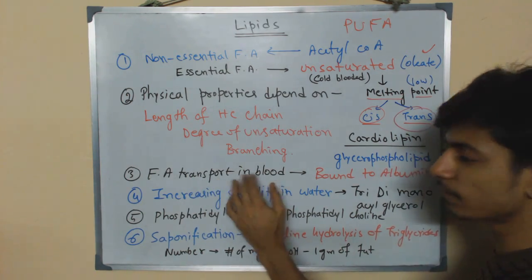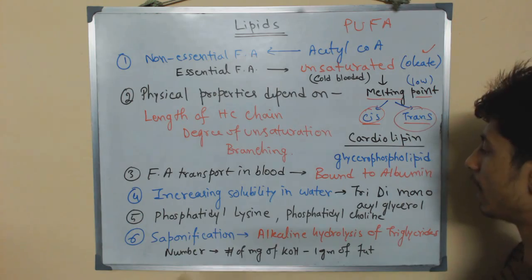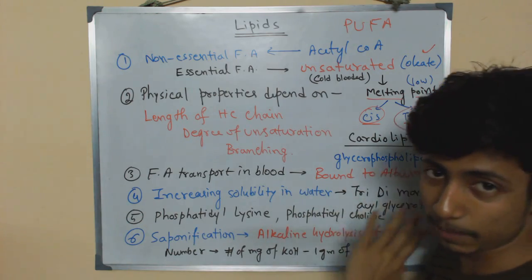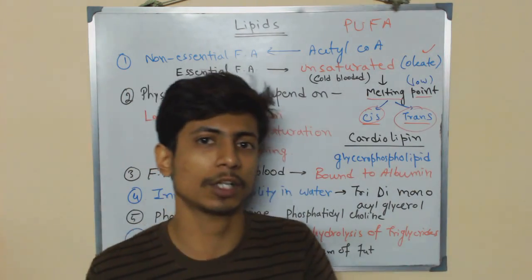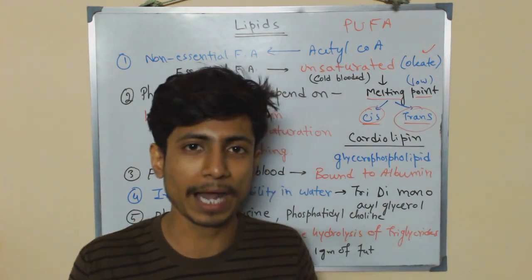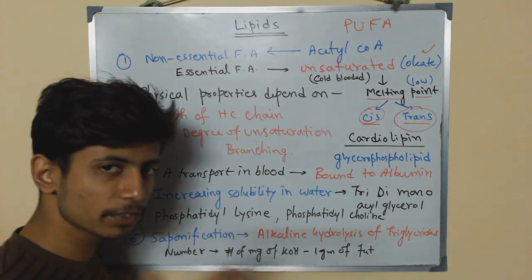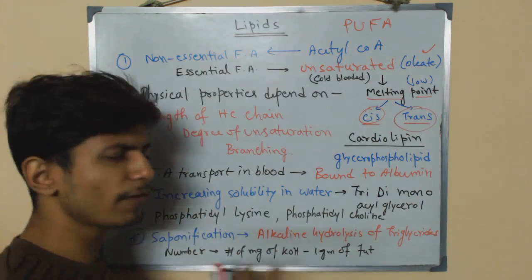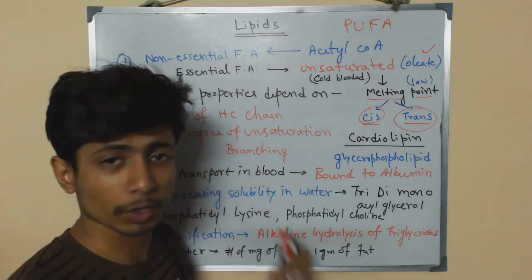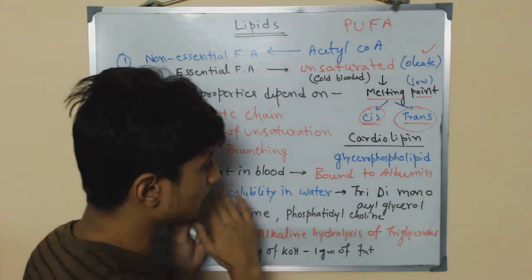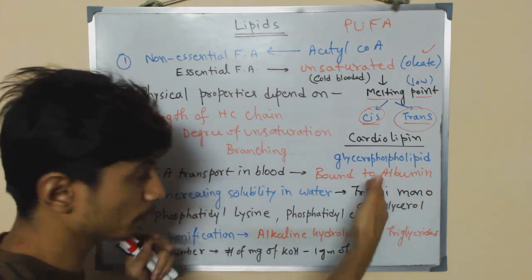In the blood, fatty acids are transported bound to albumin, a protein found in blood. While other transport systems like chylomicrons exist, most fatty acid transport is actually carried out by albumin, which increases their solubility in water.